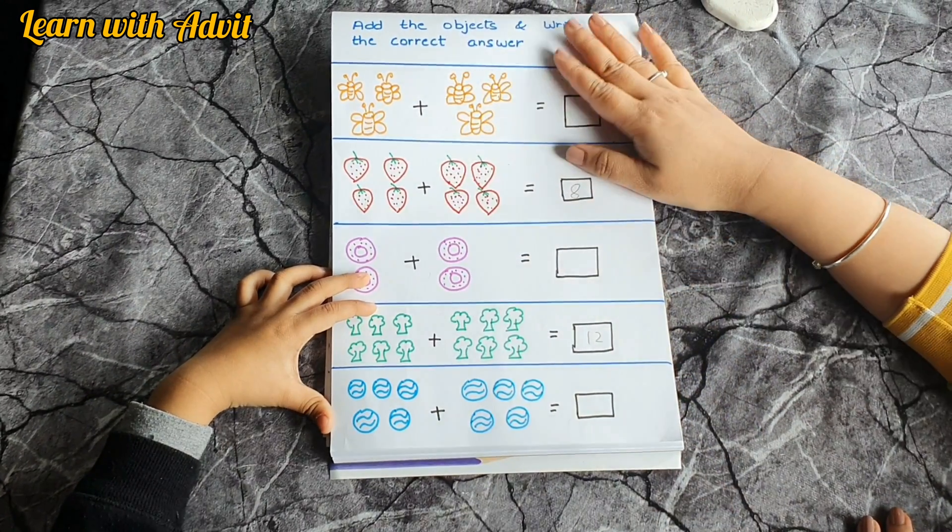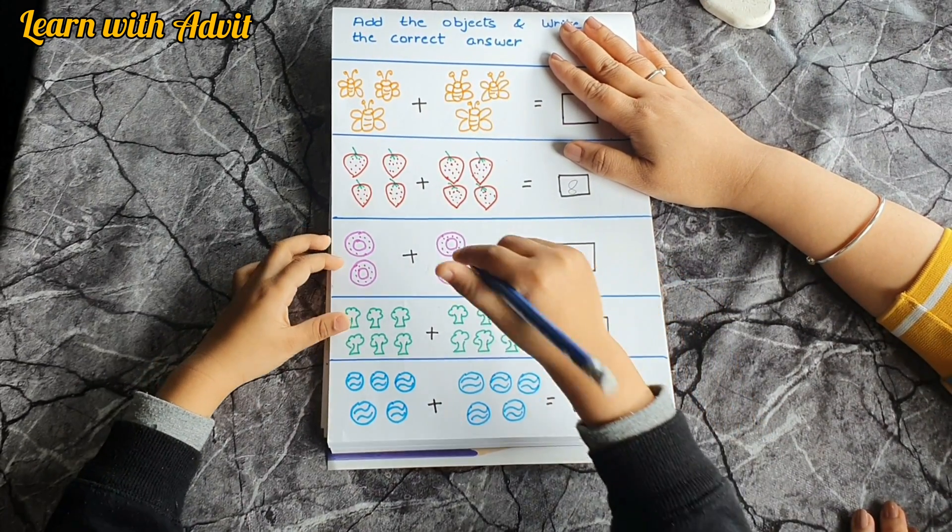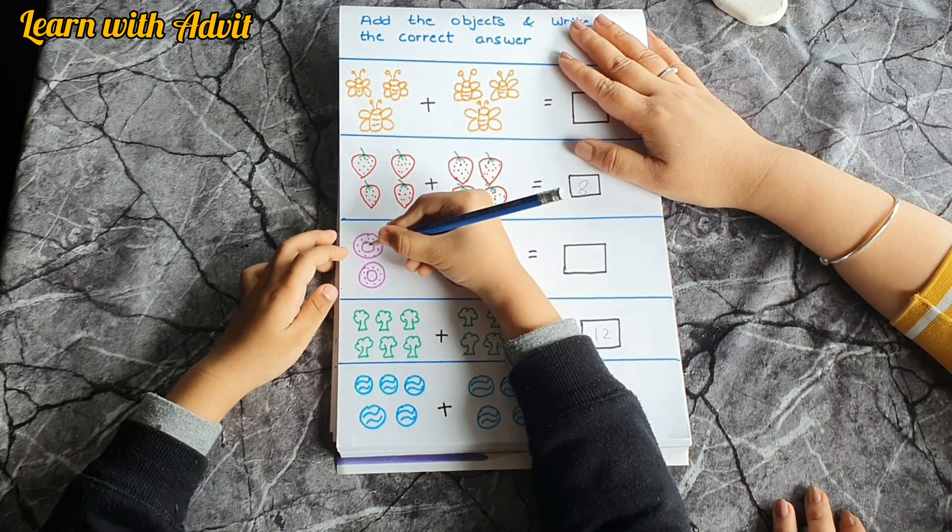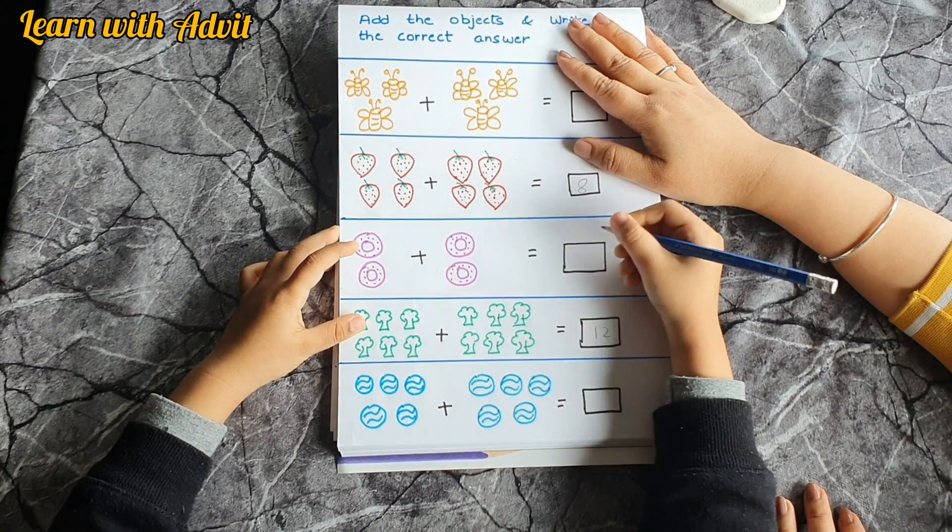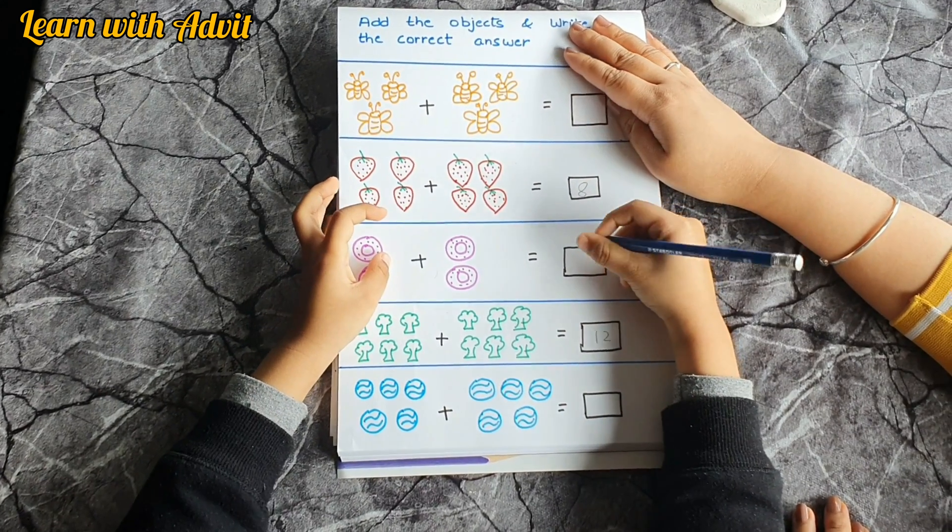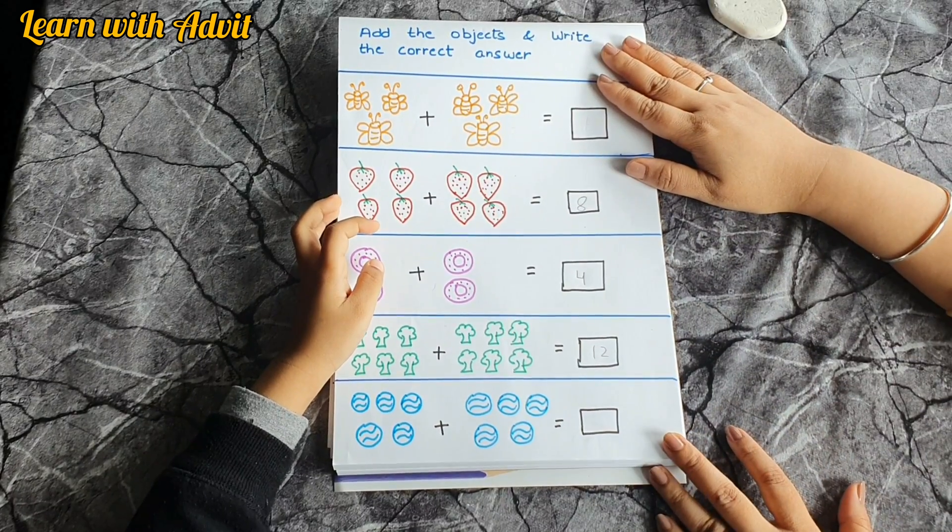Oh, what's this? Yummy, yummy looking donut. Count how many? One, two, three, four. Very good. So like this, you have to complete it later. Okay?